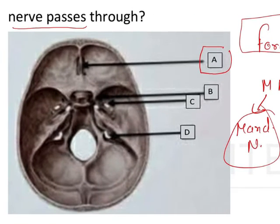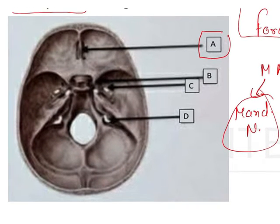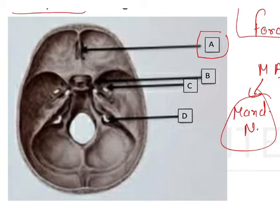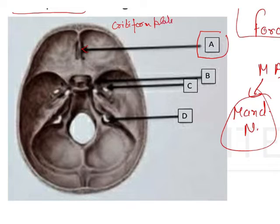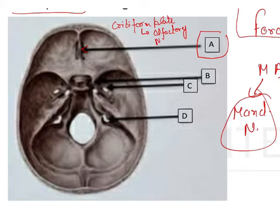Let me enlarge this so we can see a better view. So A basically points towards the cribriform plate. This is the cribriform plate, and the structure which passes through it is going to be your olfactory nerves.